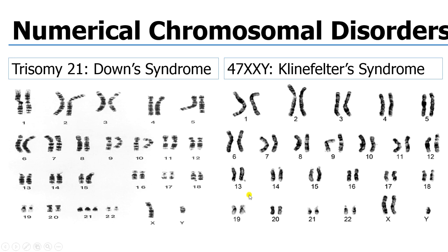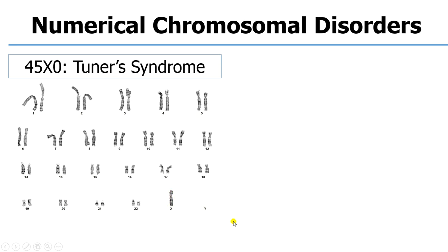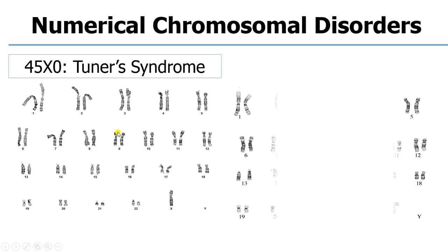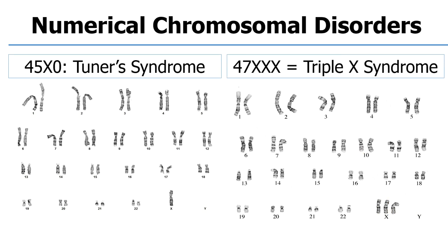Ideally, you should only have two X chromosomes with an absent Y, or one X and one Y — but you cannot have two X and a Y; that is abnormal, and we call that Klinefelter's syndrome. You can also have monosomy of the 23rd chromosome, where there is just one chromosome in the 23rd pair, famously known as Turner's syndrome — just one X chromosome without its pair and nothing in the Y, written as 45XO. You can also have three X chromosomes and no Y chromosome — this is the superfemale, or triple X syndrome, written as 47XXX.